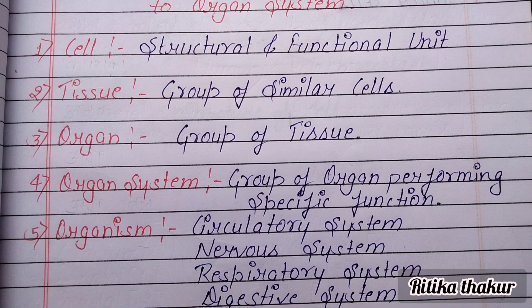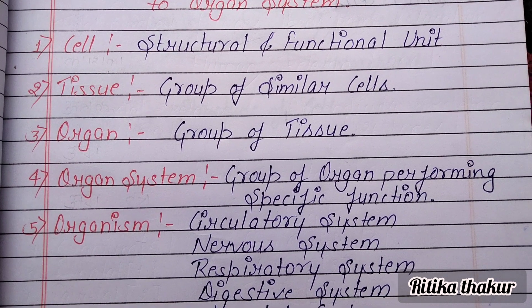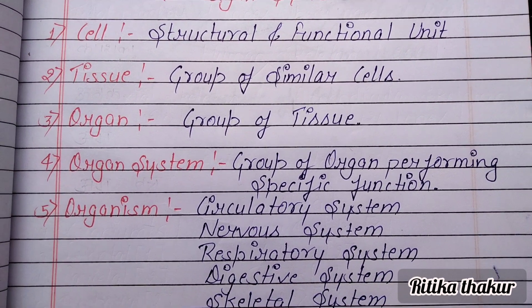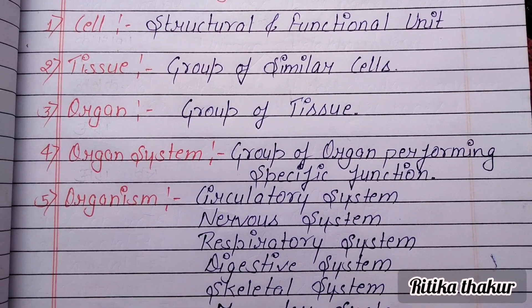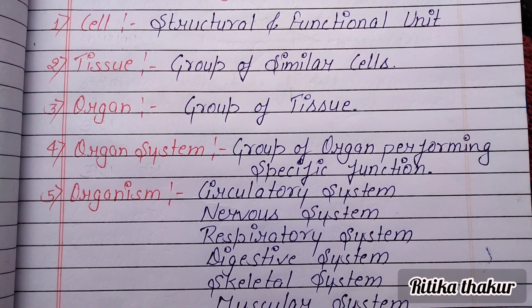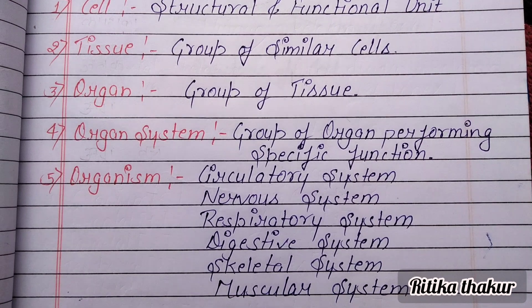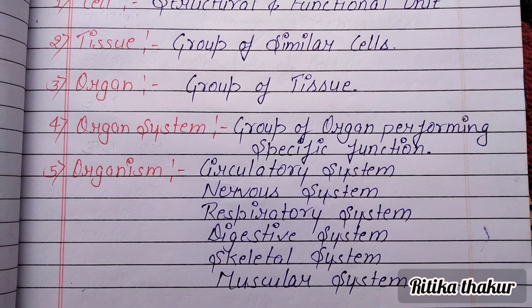Organ systems perform passive functions for the organism. Examples include the circulatory system, nervous system, respiratory system, skeletal system, and muscular system.